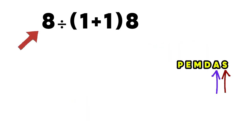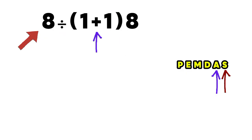In this expression, we have one parenthesis, one multiplication, and one division. Inside the parenthesis, we have a simple addition. And this part here is a multiplication, because in mathematics, when a number is written beside a parenthesis, it automatically means times, even if we do not show the multiplication sign.